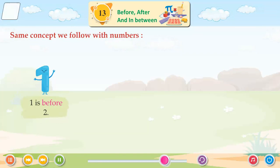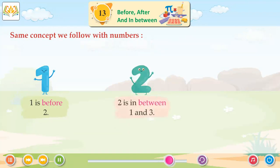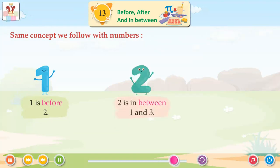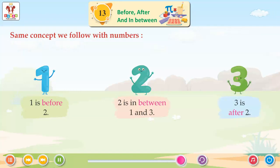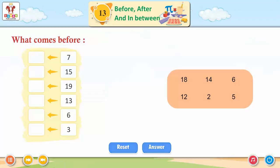1 is before 2. 2 is in between 1 and 3. 3 is after 2. What comes before?